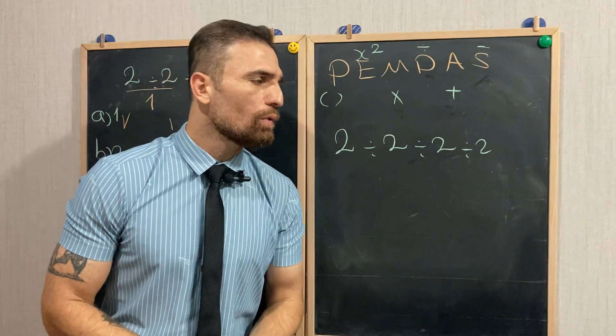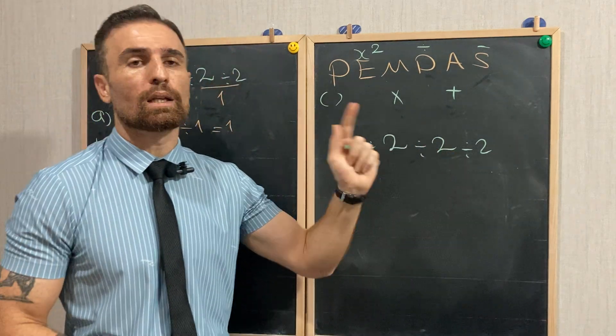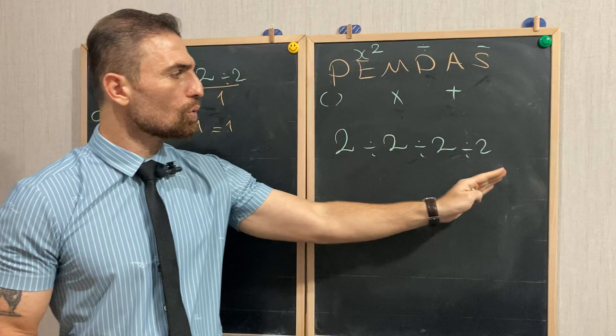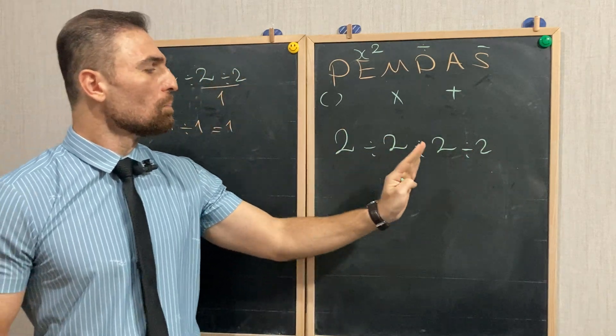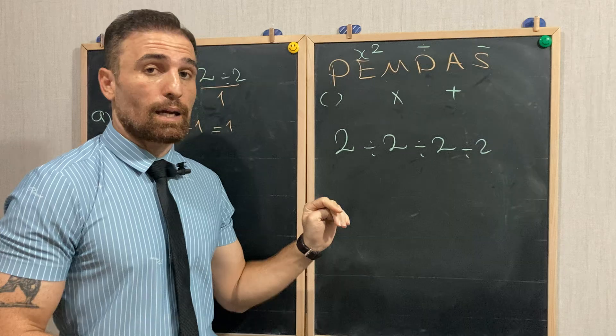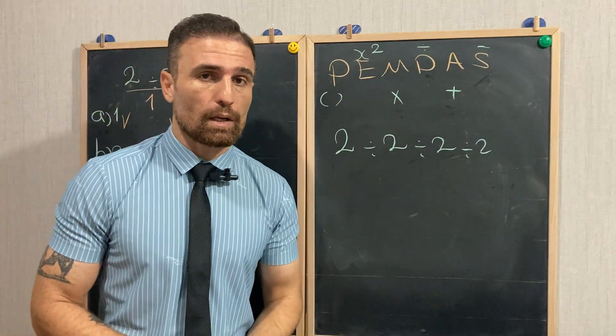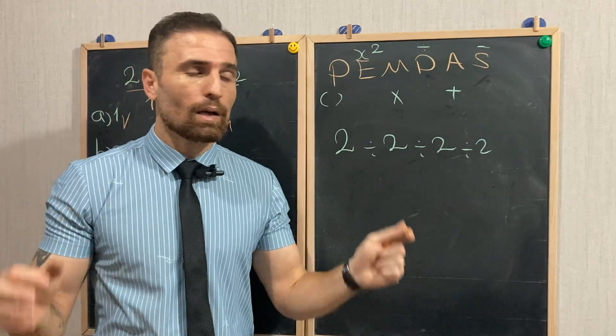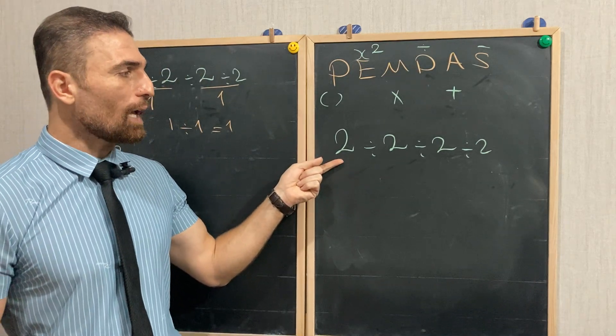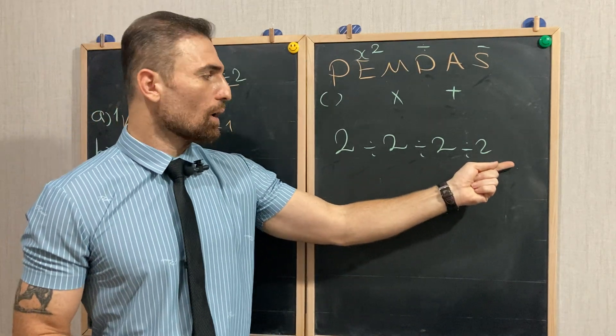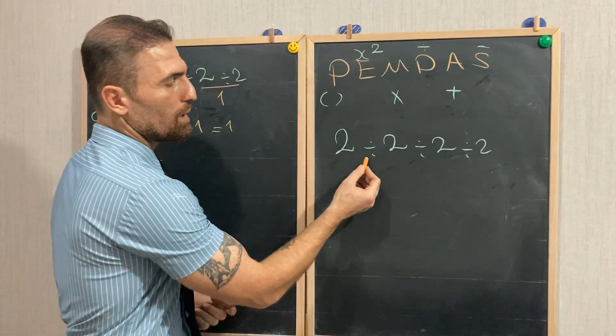But what should we do when we have more than one division in one question? Should we start from the left and go to the right, or should we start from the right and come to the left, or middle one? In this case, when we have more than one operation, the same operation in one question, we need to start from the ones on the left and work our way to the right.